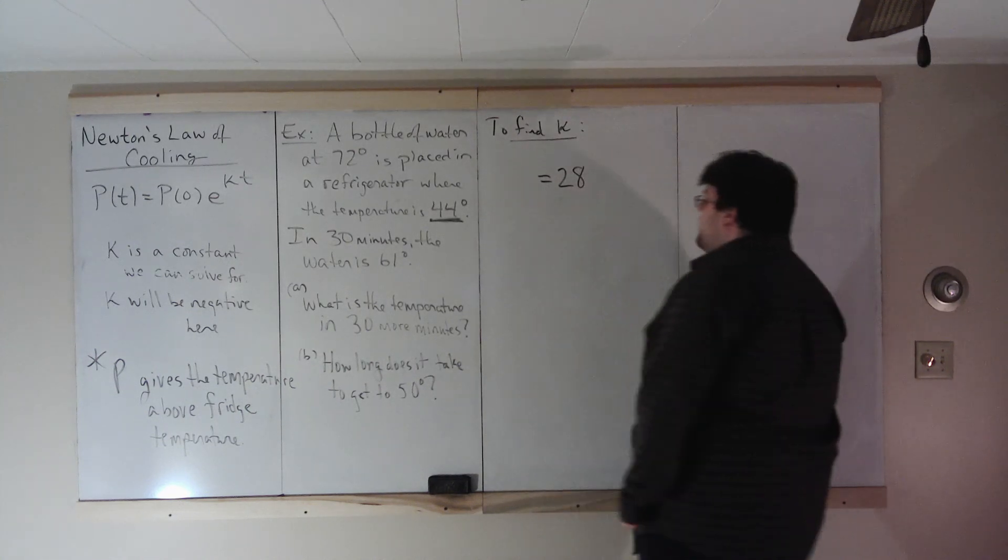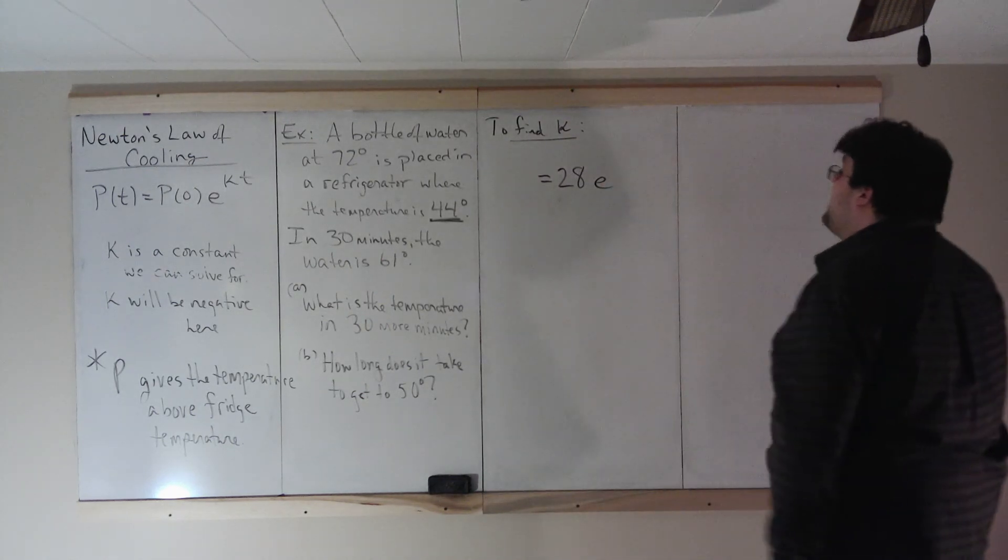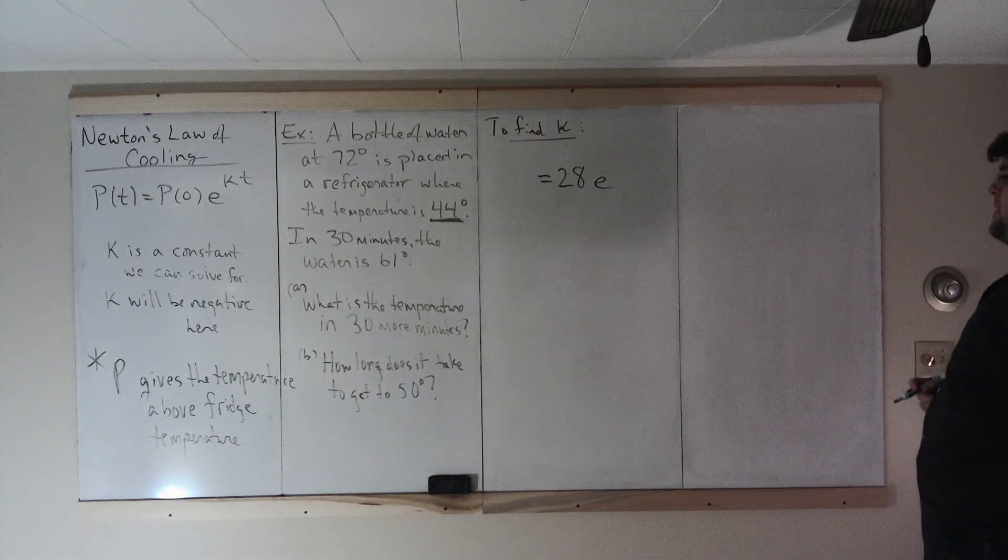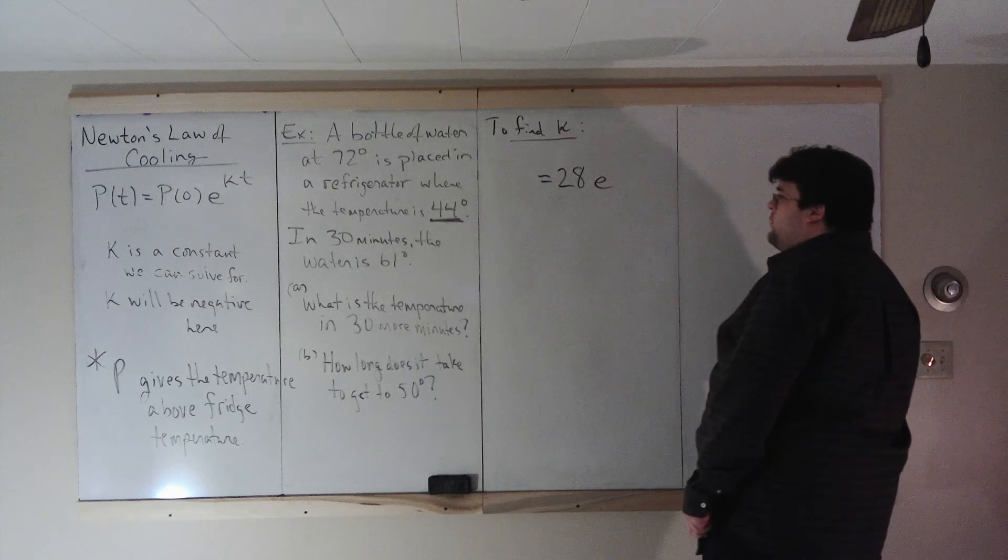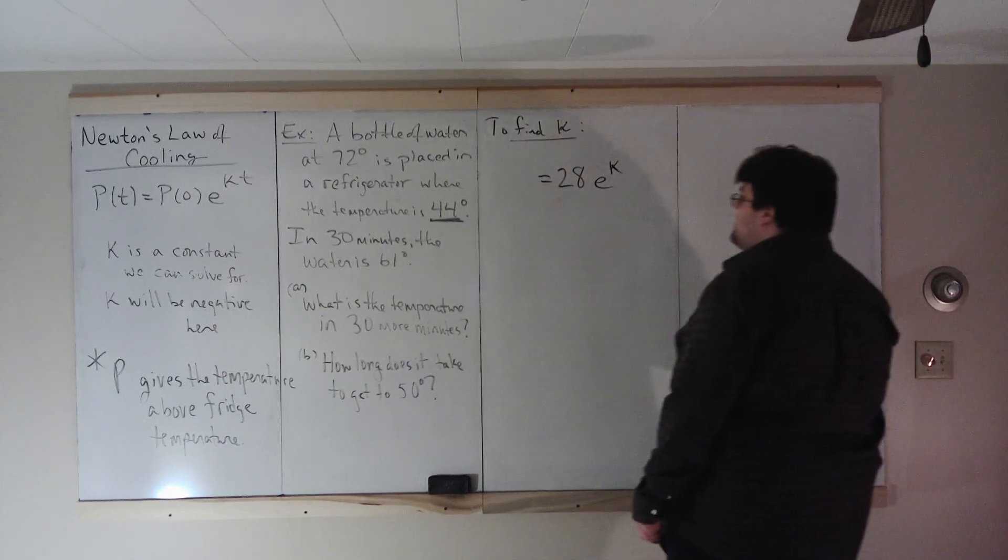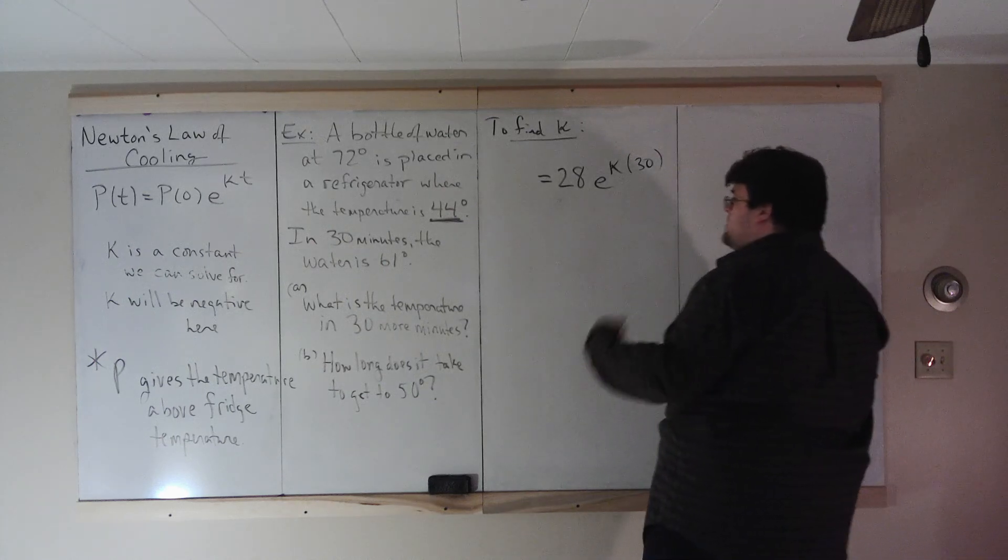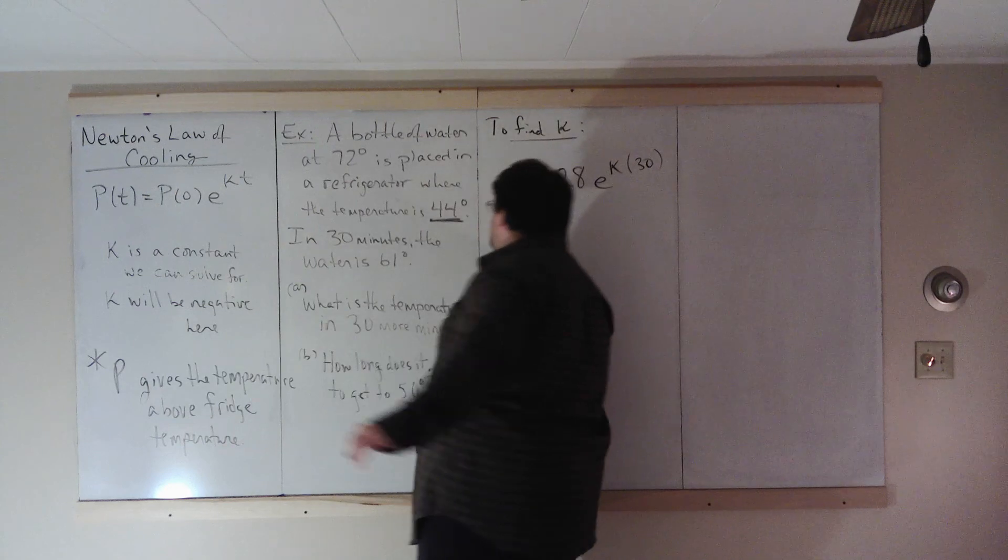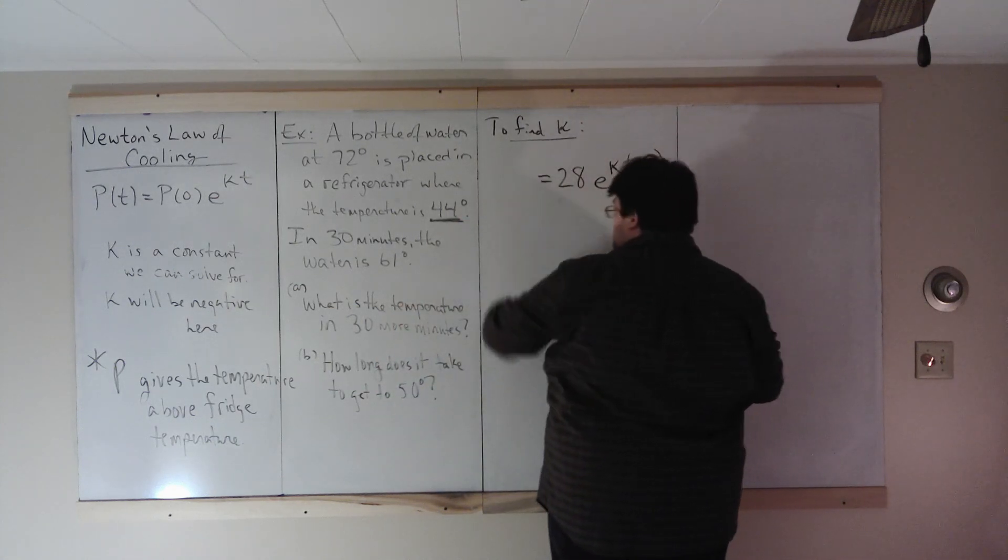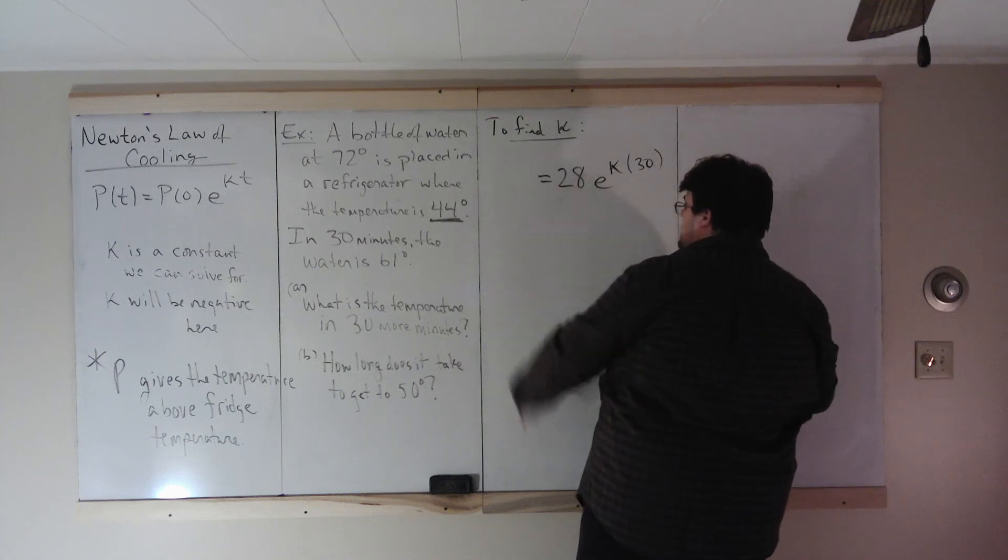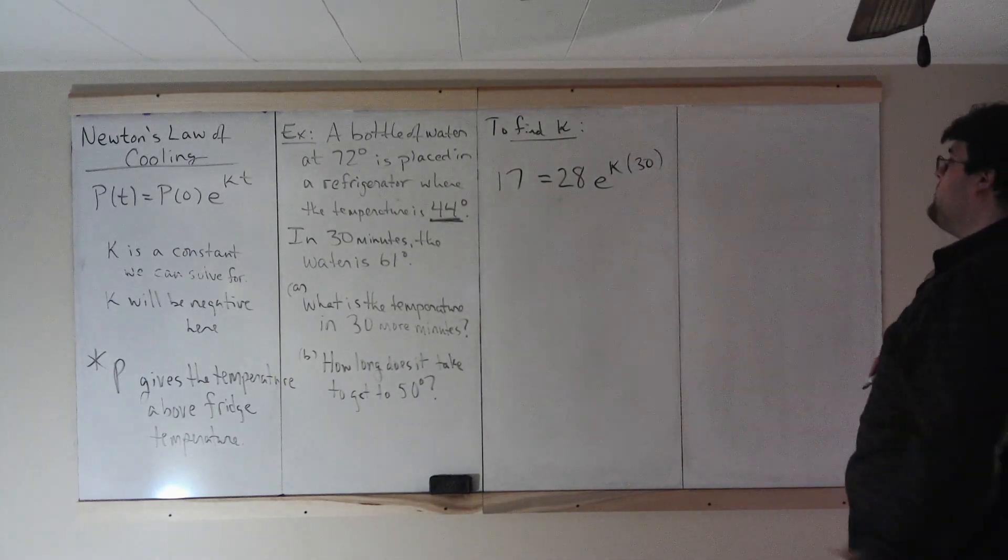To find K, initial temperature, what is the initial temperature? Well, the initial temperature, 72 degrees. But remember, we're looking at temperatures as they relate to 44 degrees. 72 is 28 more than 44. So on the right side of this equation, the initial temperature is 28 above fridge temperature. 44 degrees, I think it's considered way too high for a fridge. But this was in a math textbook. I think fridges are supposed to be like 38 maybe? 72 is 28 above 44. So E to the K times T, in 30 minutes, E to the K times 30, in 30 minutes the water is 61 degrees. So at 30 minutes the water is 61 degrees. But we're not going to put 61 over here because our temperatures are all considered in relation to 44. 61 is 17 more than 44. So we have this equation which we want to solve for K.